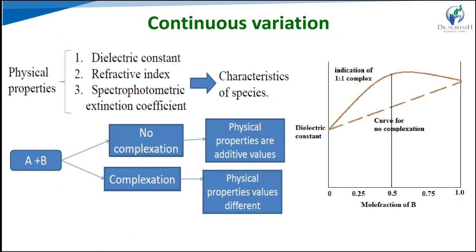Solutions of two species A and B are mixed at equal molecular concentration. If a complex is formed between A and B, then the values of additive properties deviate from the maximum. For constant total concentrations of A and B, the complex is at the highest concentration at the point where species A and B are combined in the ratio in which they occur in the complex — indicating a 1:1 complex. The slope change at the mole fraction indicates the type of complex formed.